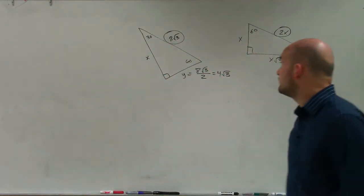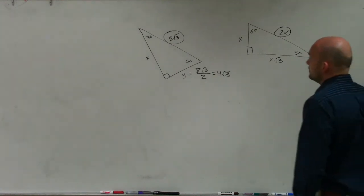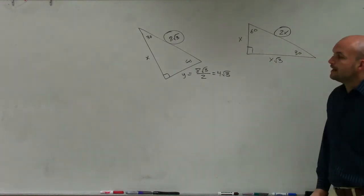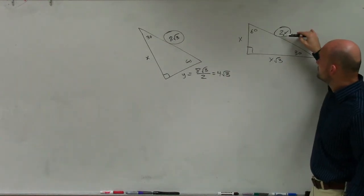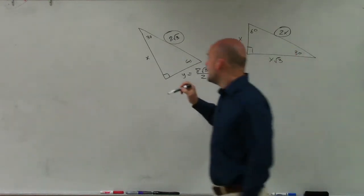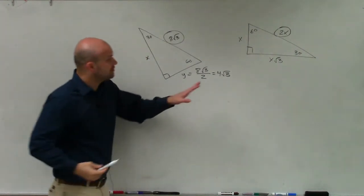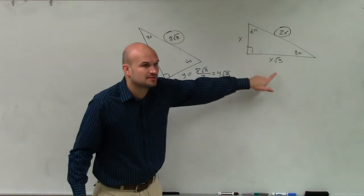Now we can do this a couple different ways. So again, now I'm provided the hypotenuse. Now we know the short leg. How do we go from short leg to long leg? Multiply.